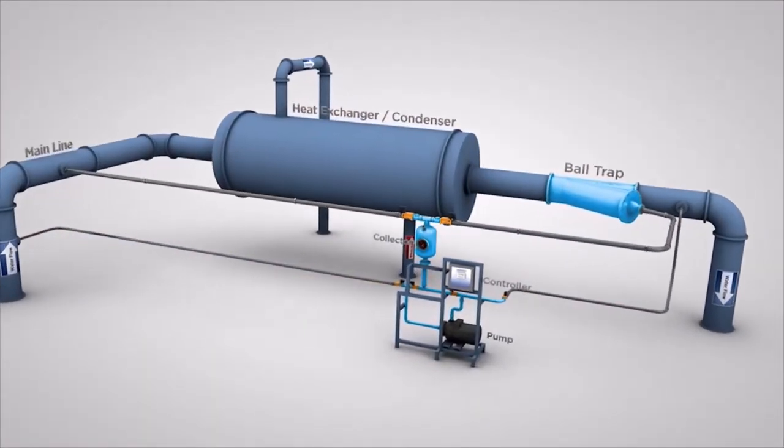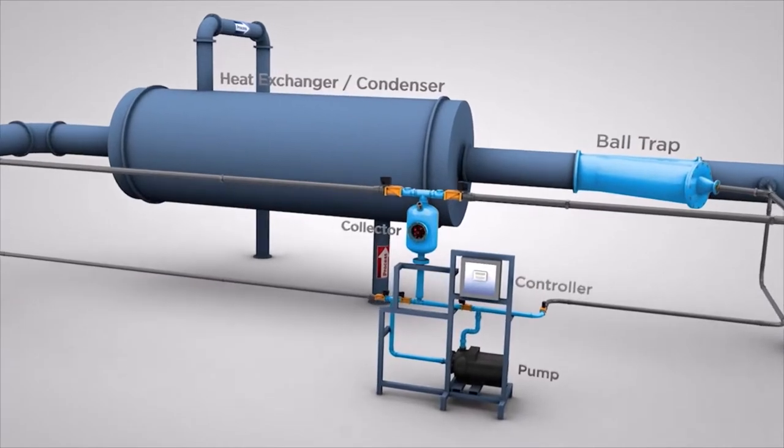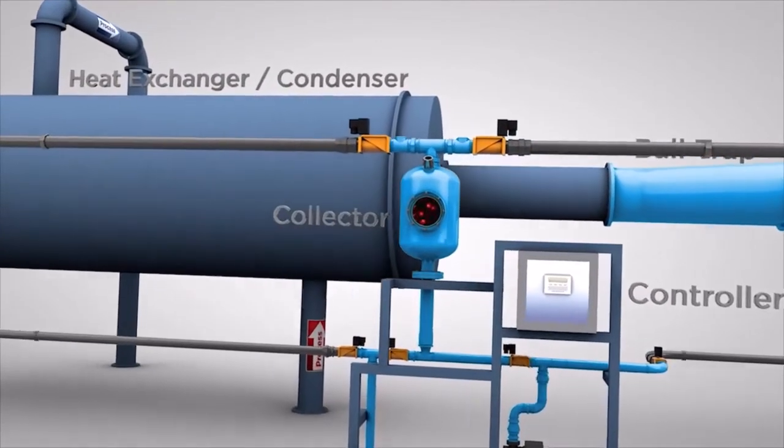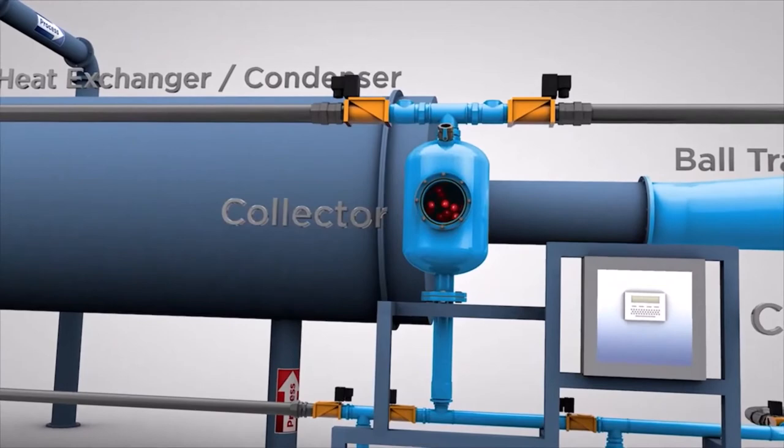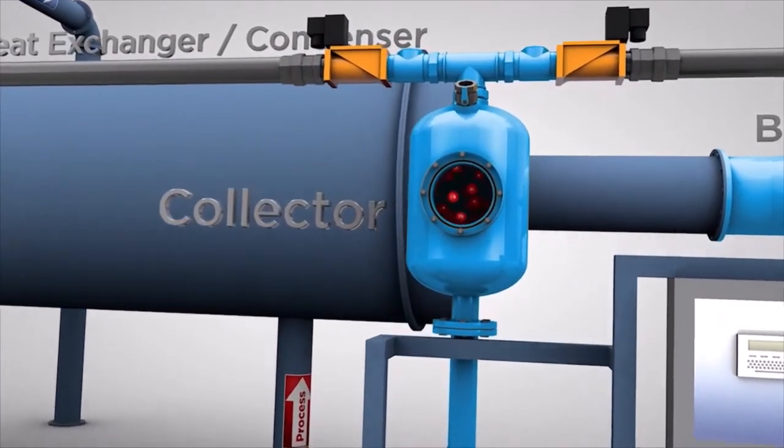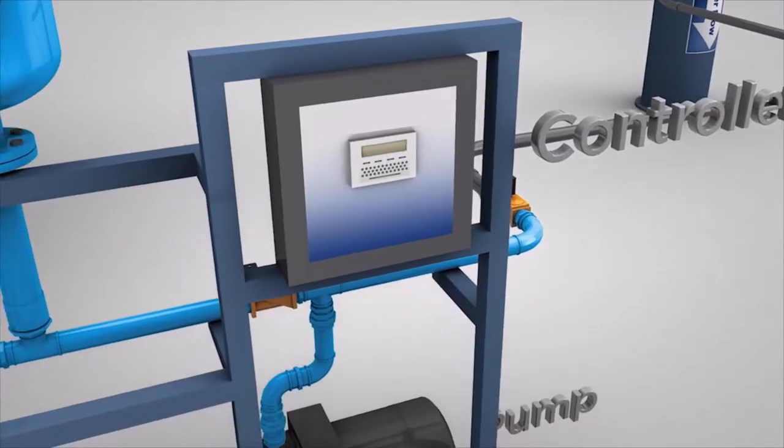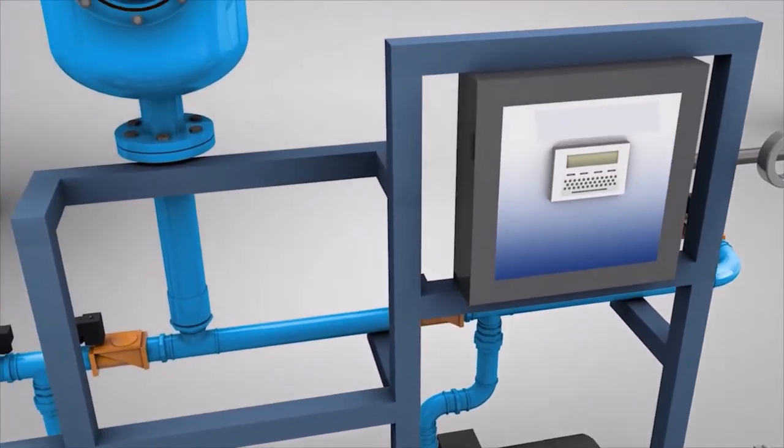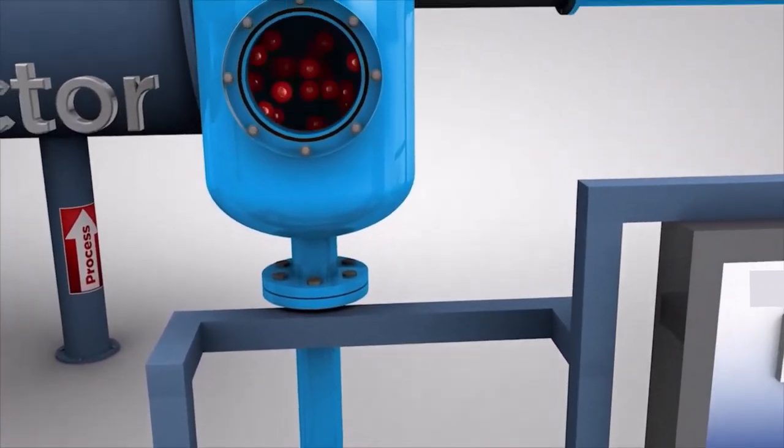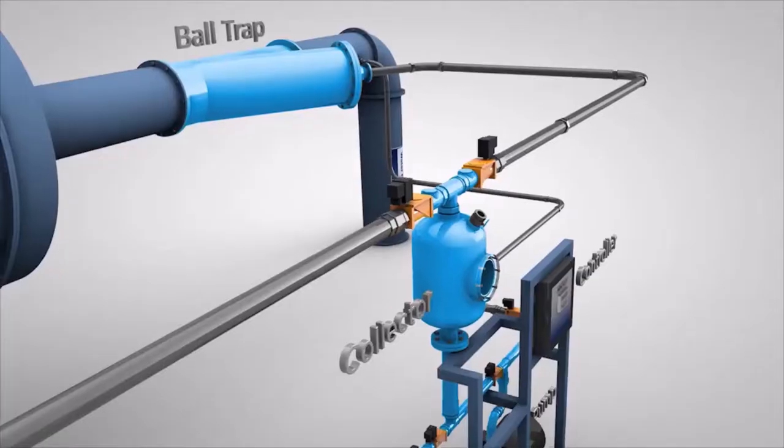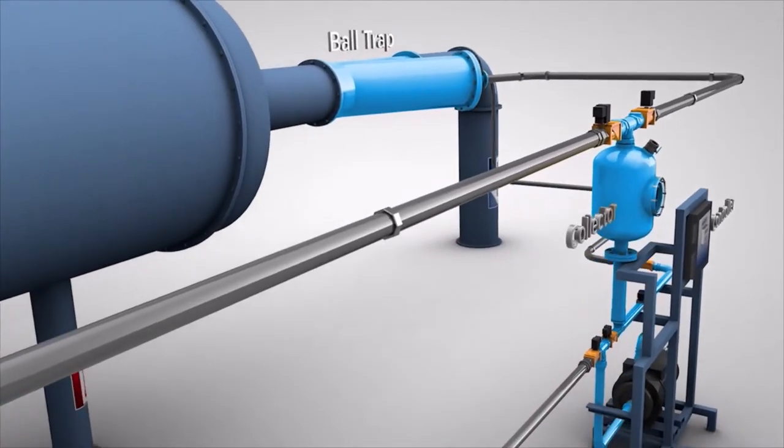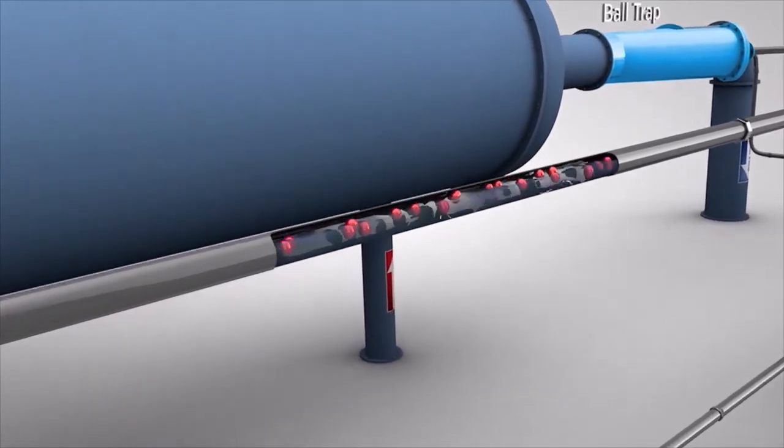The balls start out in a collector that's connected to your heat exchanger or condenser through the system's main line. A window in the collector allows you to easily monitor the condition and amount of balls. Water flows through the pipes and into the collector, where the system periodically injects all of the balls into the inlet pipe at the same time.